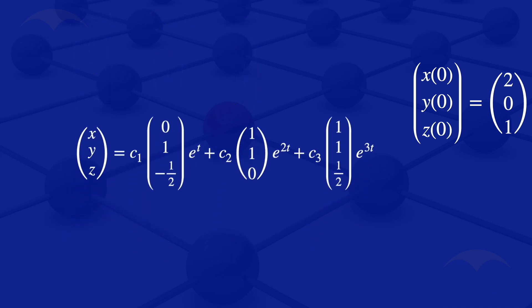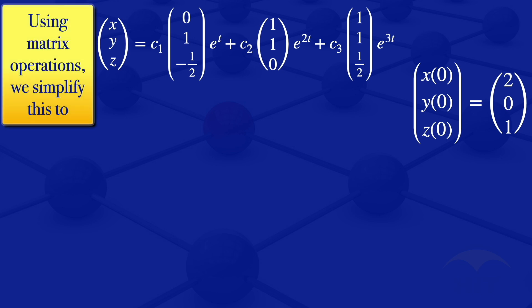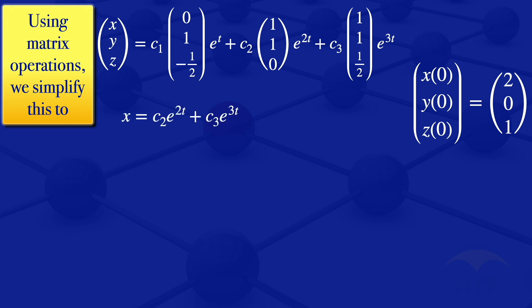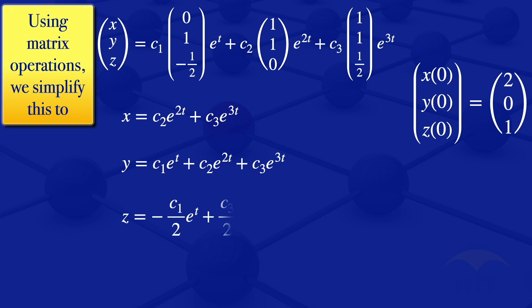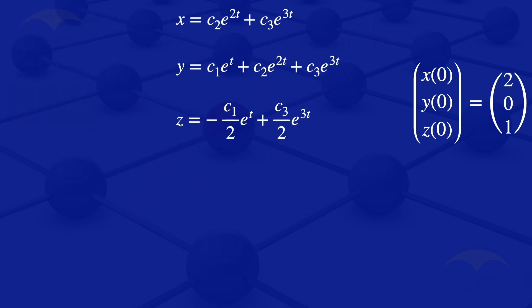We can simplify this using matrix operations by multiplying out the vectors and combining terms. Equating the left and right-hand sides, we get: x equals c2*e^(2t) plus c3*e^(3t); y equals c1*e^t plus c2*e^(2t) plus c3*e^(3t); and z equals minus c1/2 times e^t plus c3/2 times e^(3t).